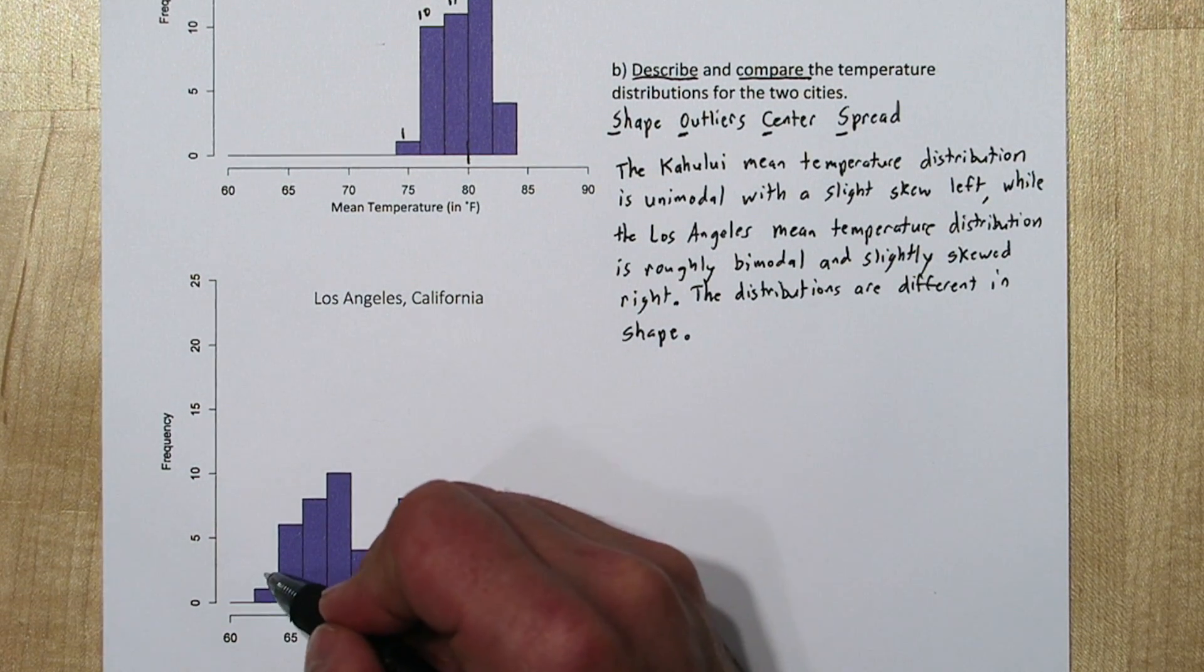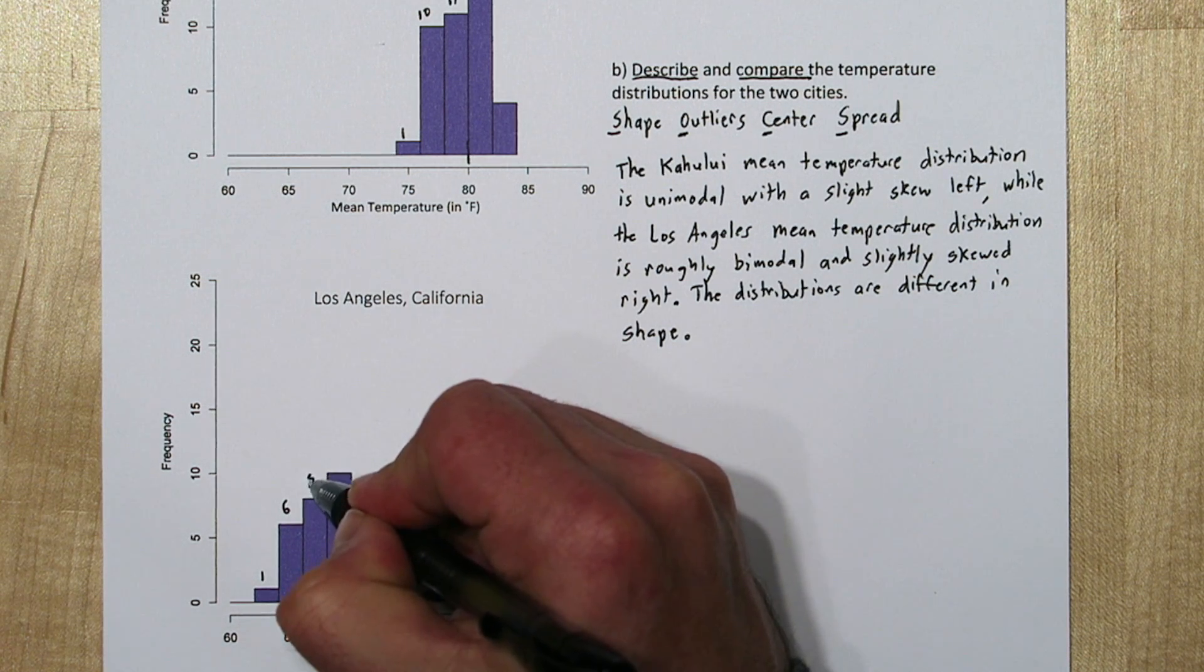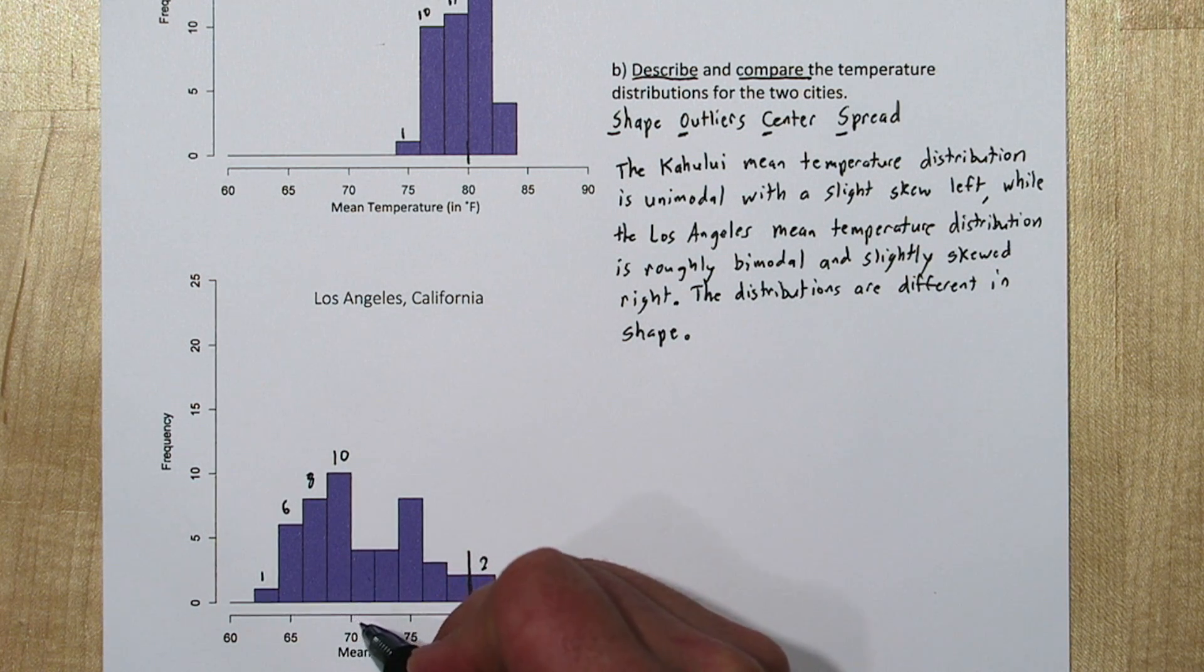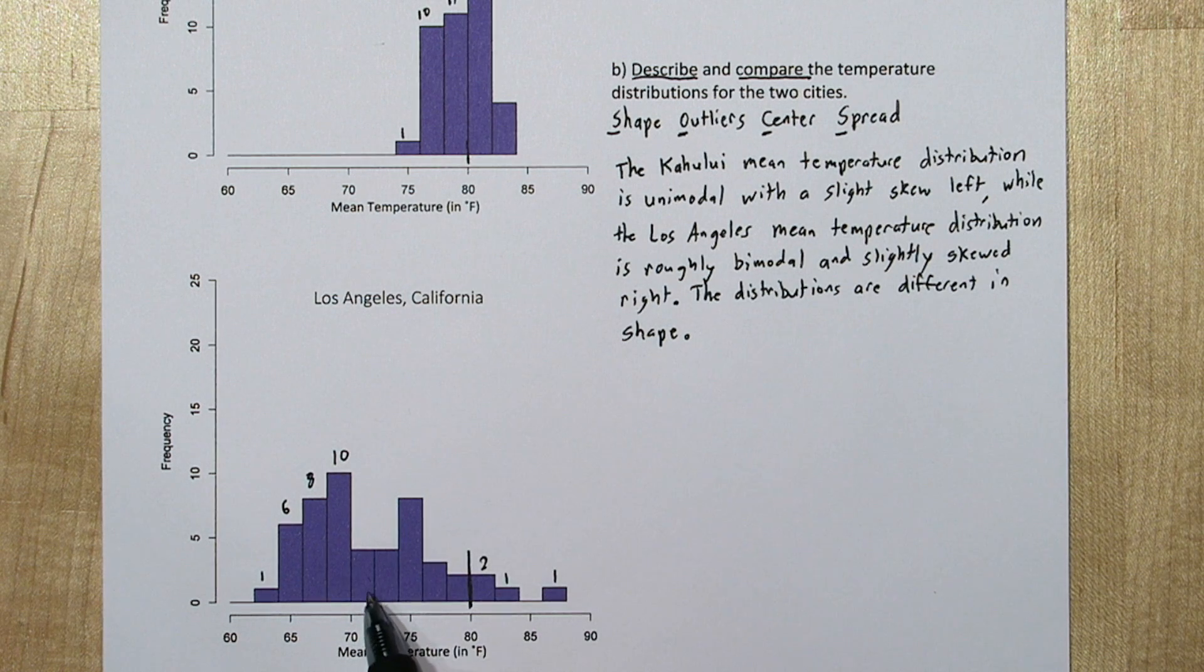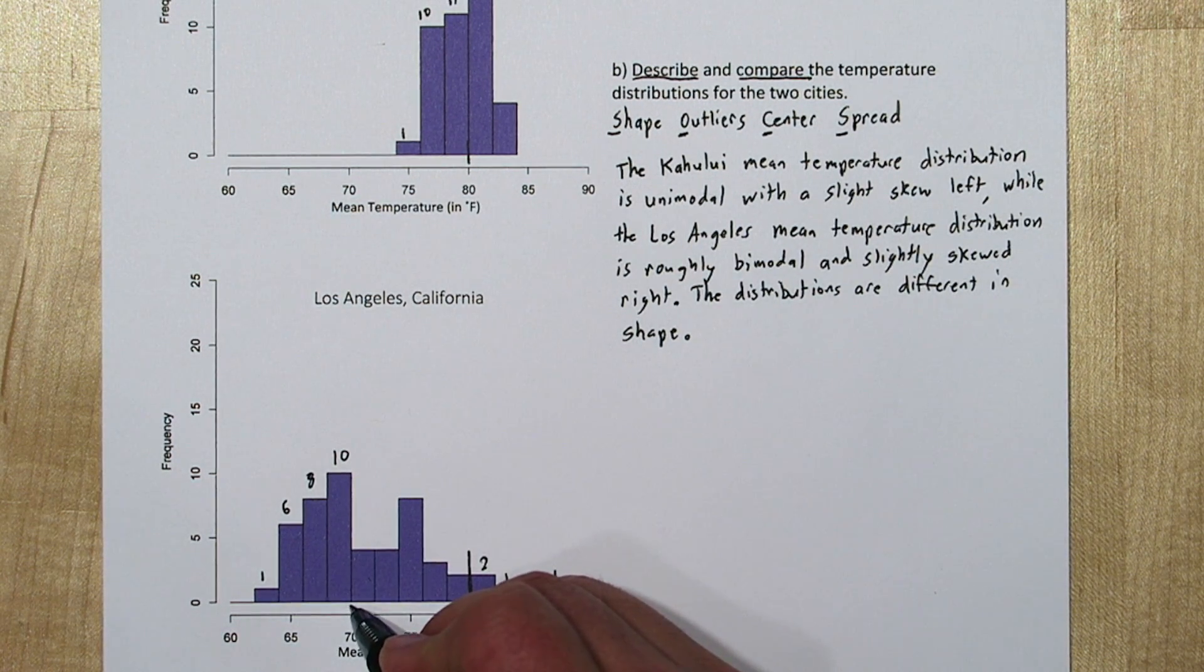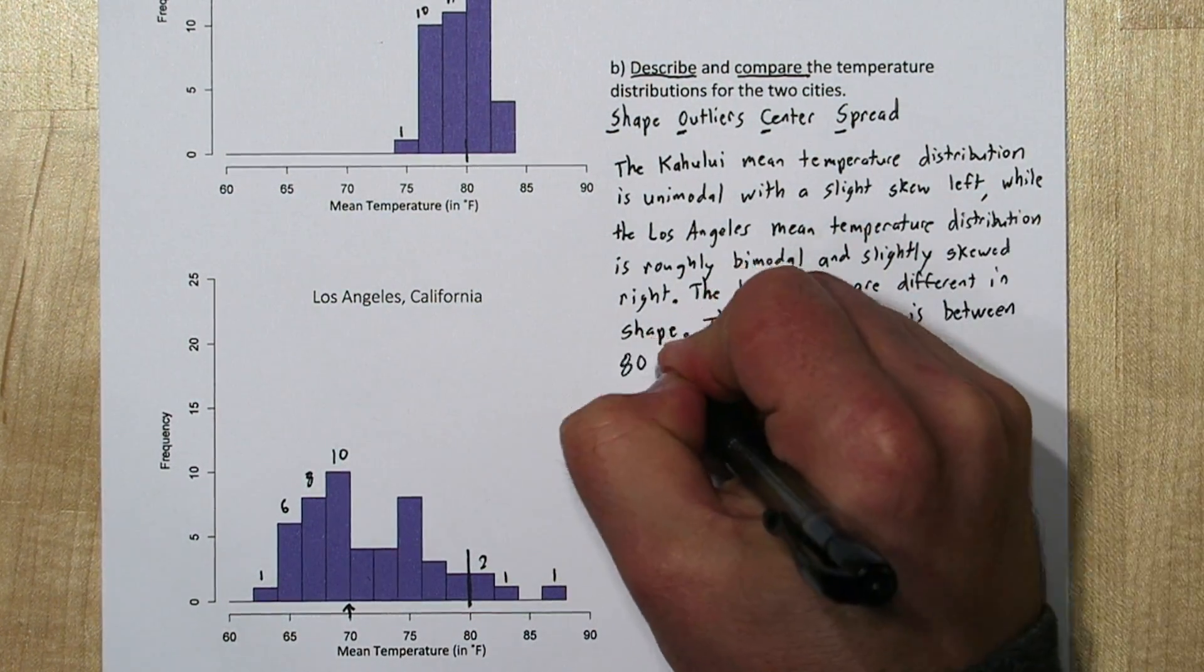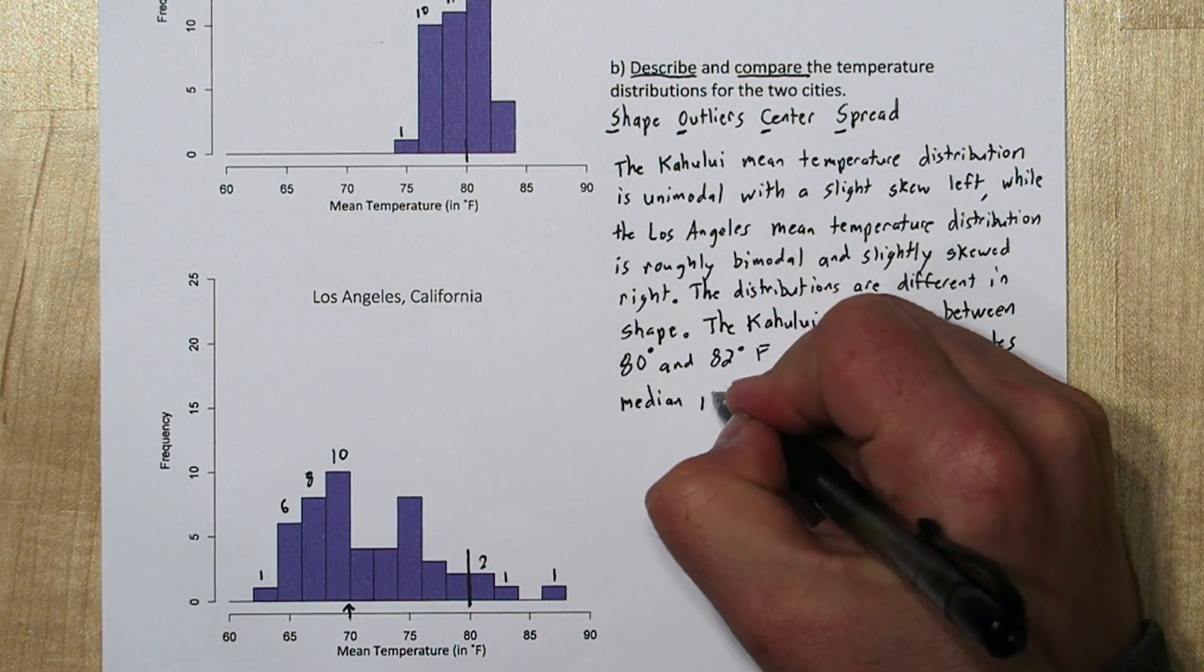For Los Angeles, it looks like we have 1, then 6, 8, 10, so we're at 18, 24, 25. Oh actually it looks like the first 25 observations are here, so the second 25 are over here. So the median must be at exactly 70 degrees. We'll say the Kahului median is between 80 and 82 degrees Fahrenheit, while the Los Angeles median is less at 70 degrees.